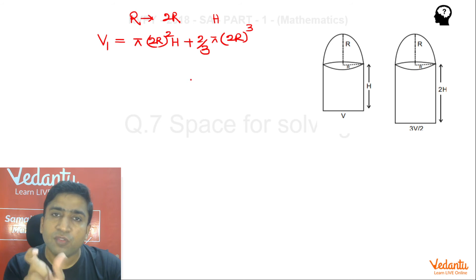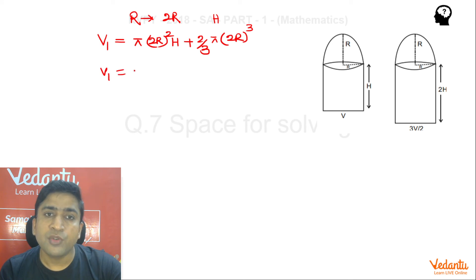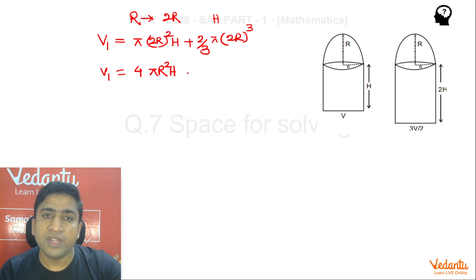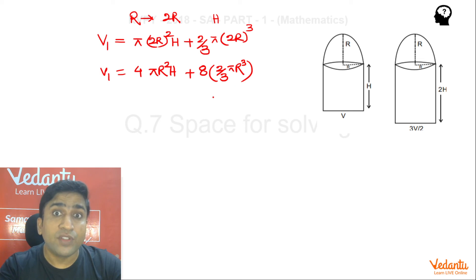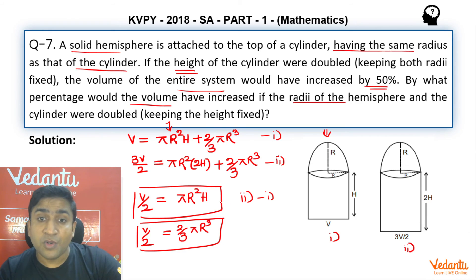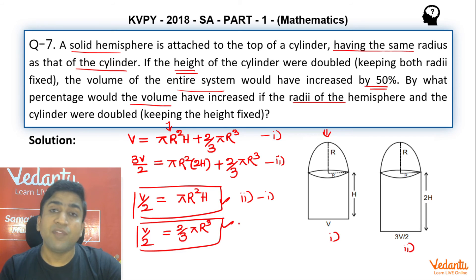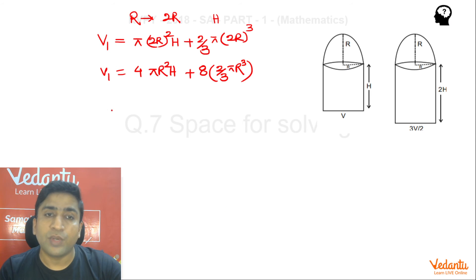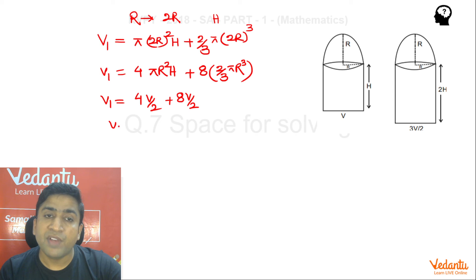My intention is to express V1 in terms of V. Taking out the factors: π(2r)²h = 4·πr²h and (2/3)π(2r)³ = 8·(2/3)πr³. Using our key relations — πr²h = V/2 and (2/3)πr³ = V/2 — we get V1 = 4·(V/2) + 8·(V/2) = 2V + 4V = 6V.